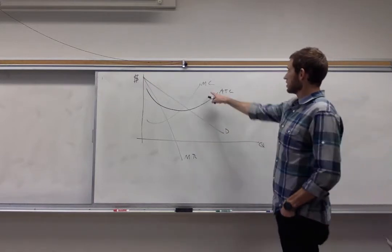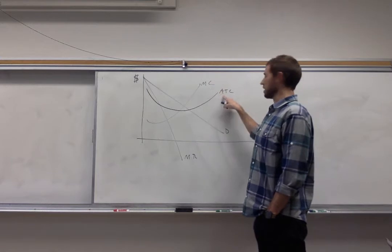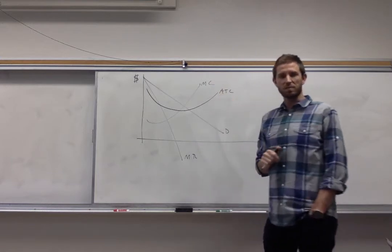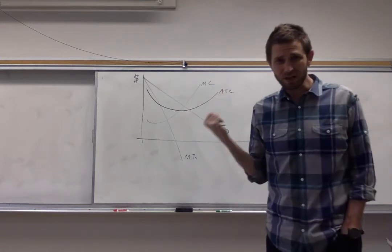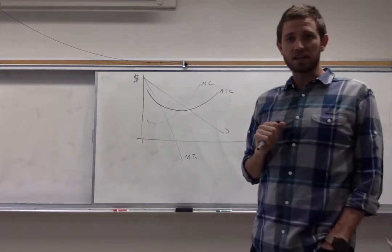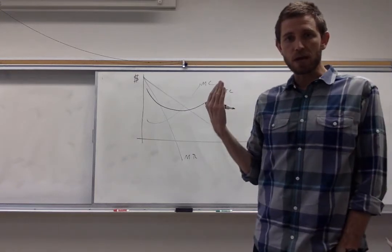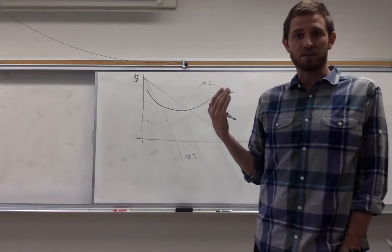And the last two curves that I have here is marginal cost and average total cost. Nothing special about those. So given a setup like this it's very likely that you'll be asked how is a firm that's operating as a monopolist going to maximize their profit.